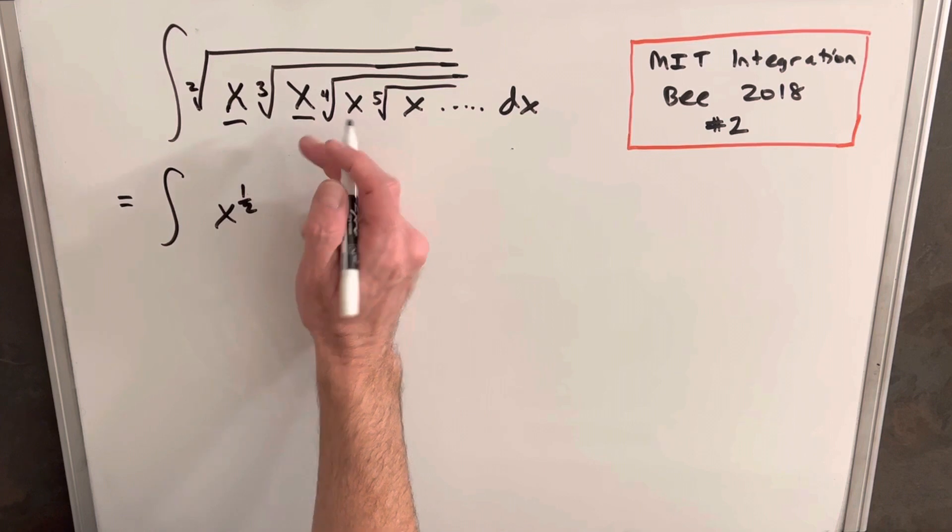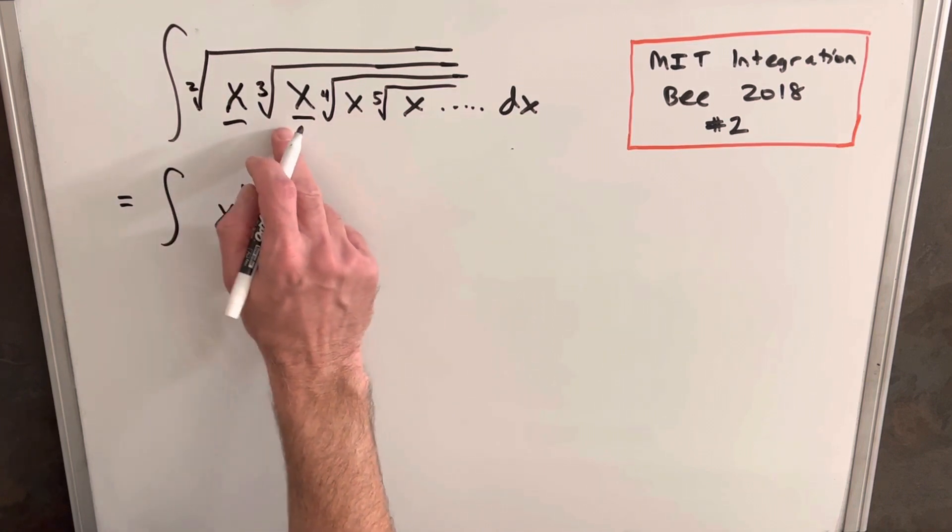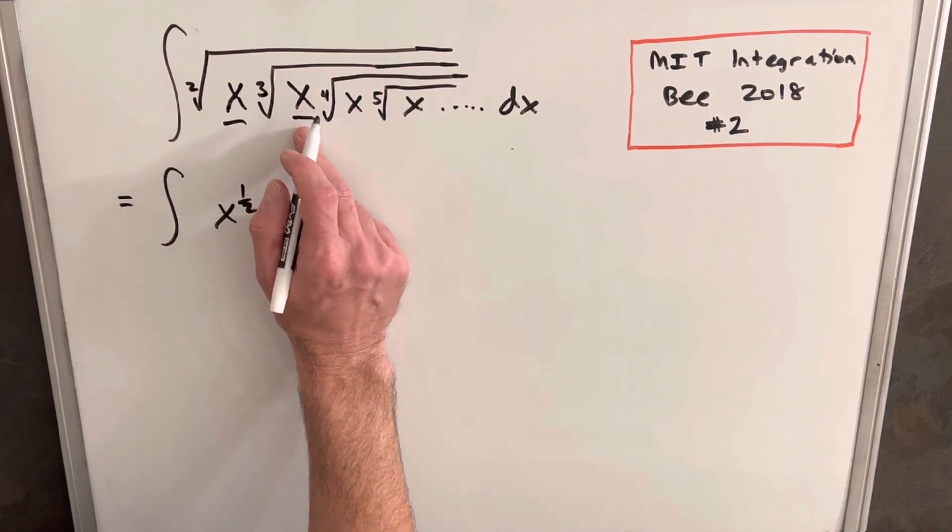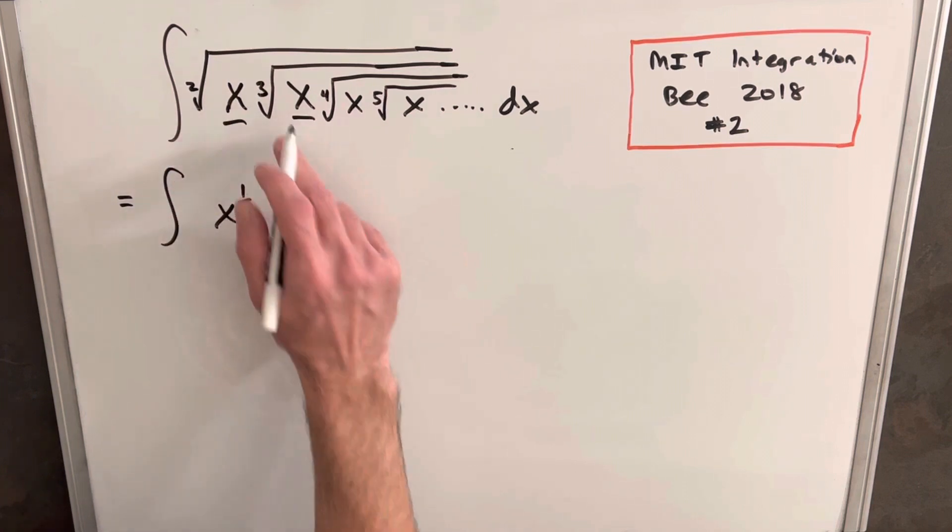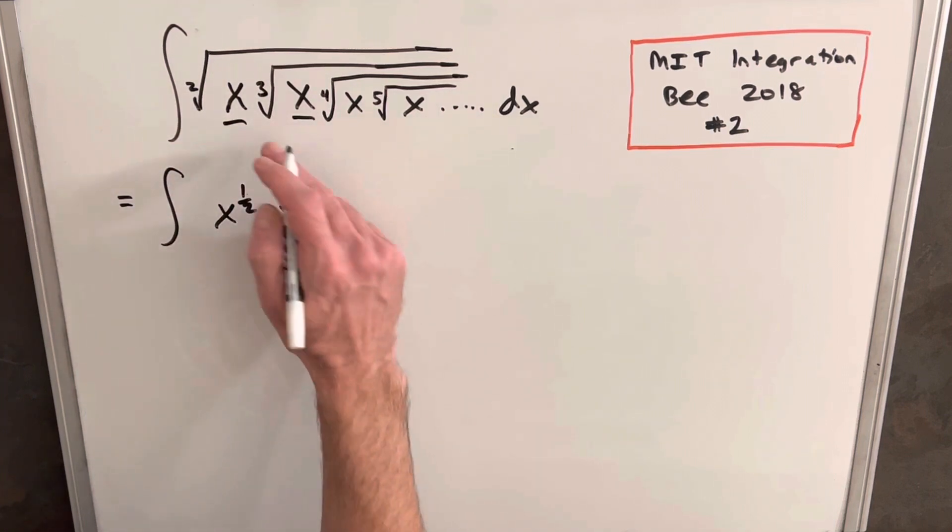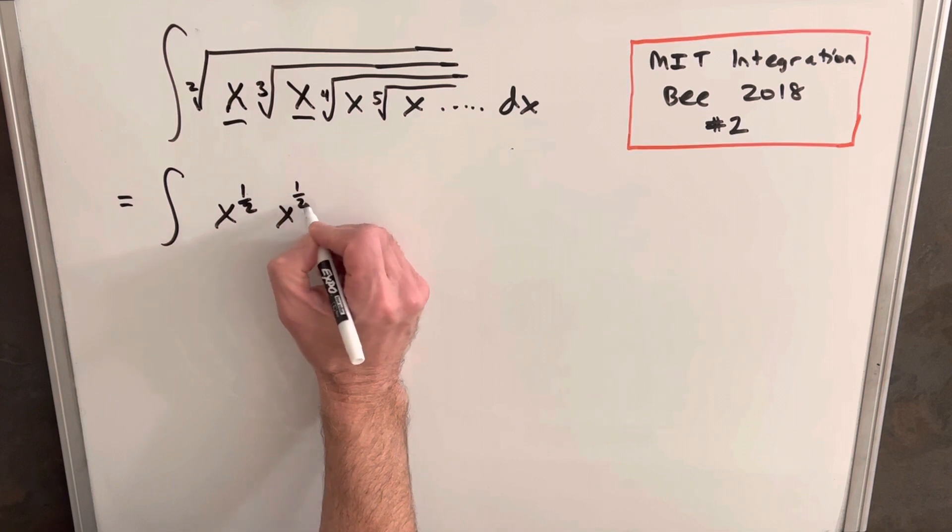Then if we move on to the next x, we notice we're under two radicals. So we have to consider that this is within a square root, but it's within a third root. So that's going to be the same thing as x times one-half times one-third.